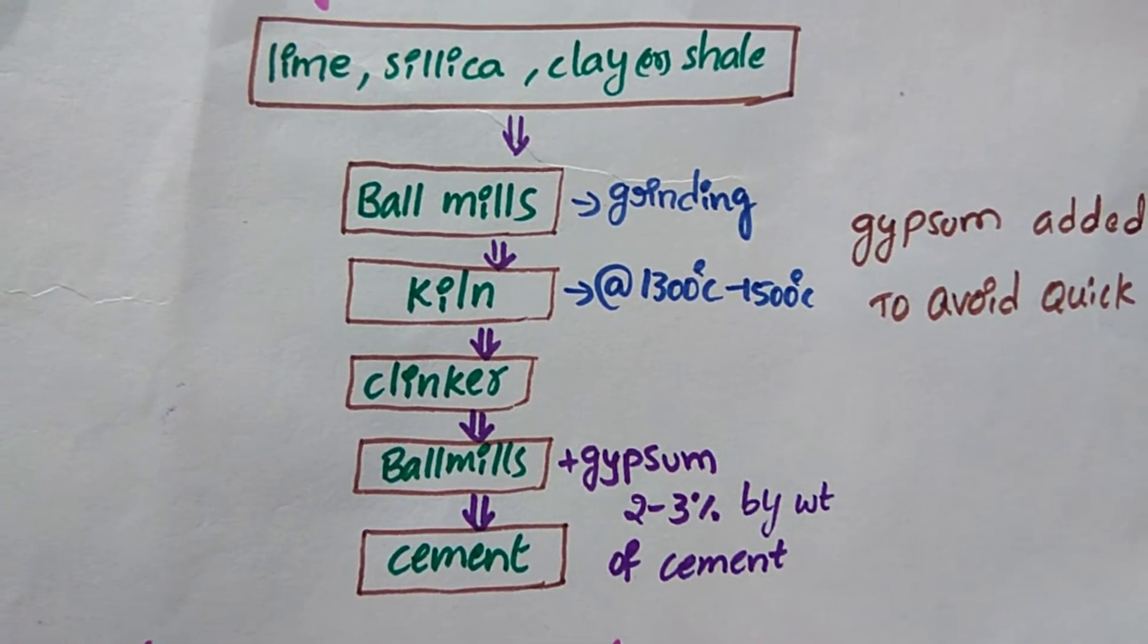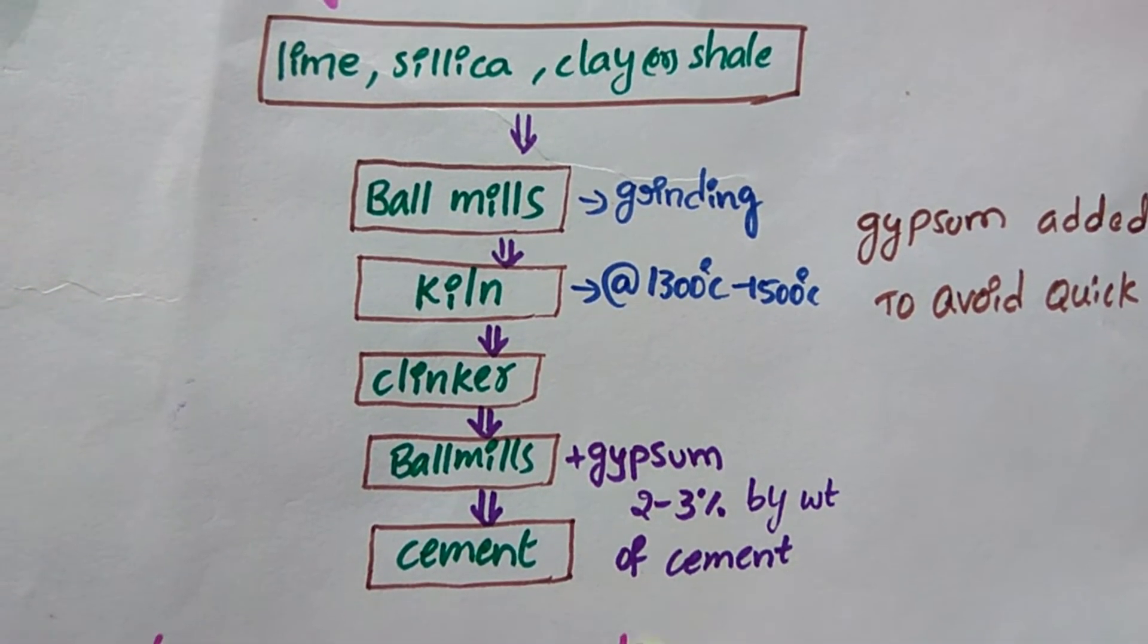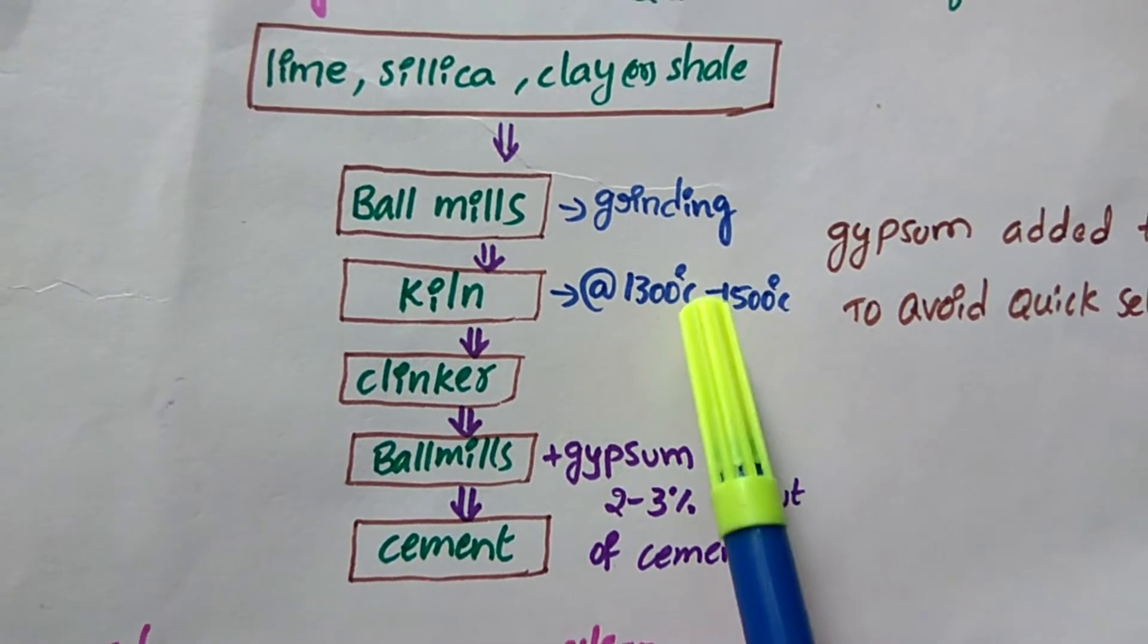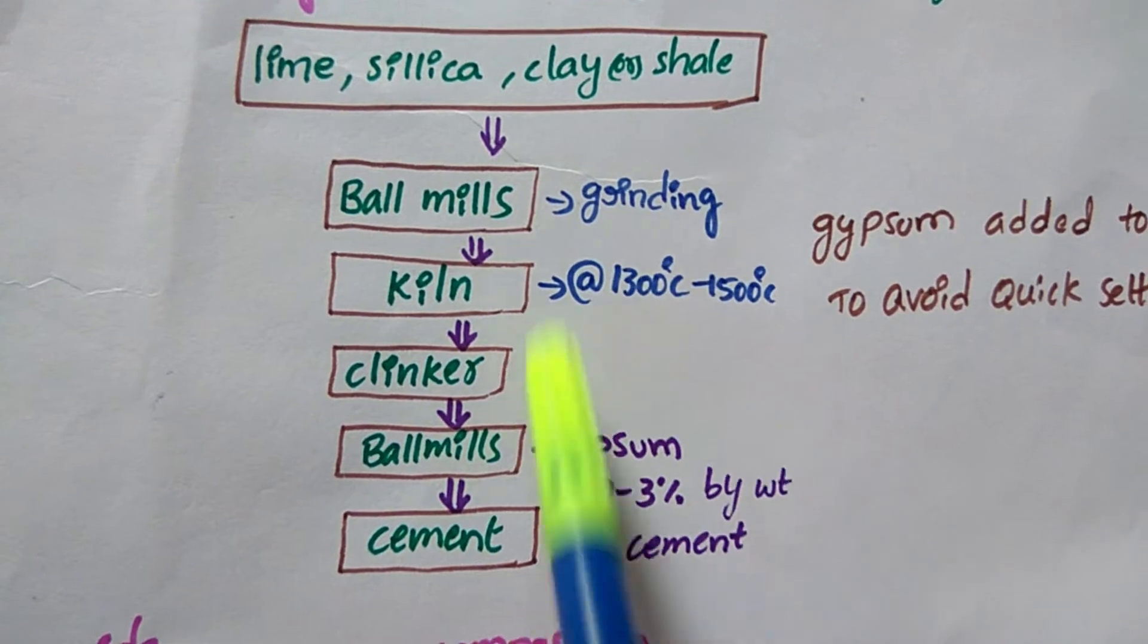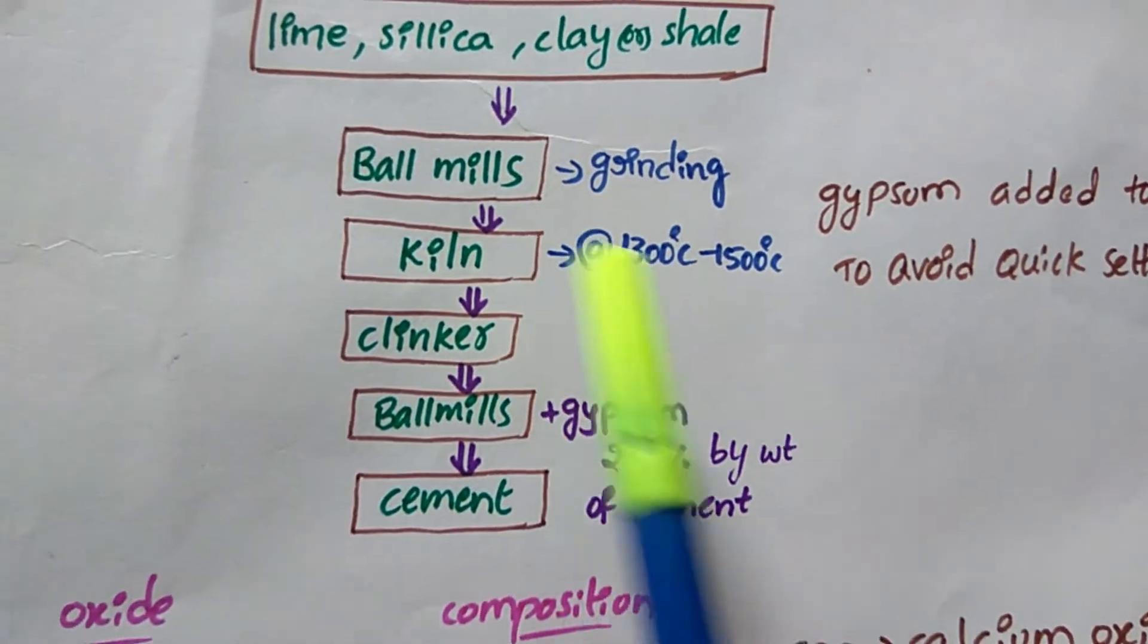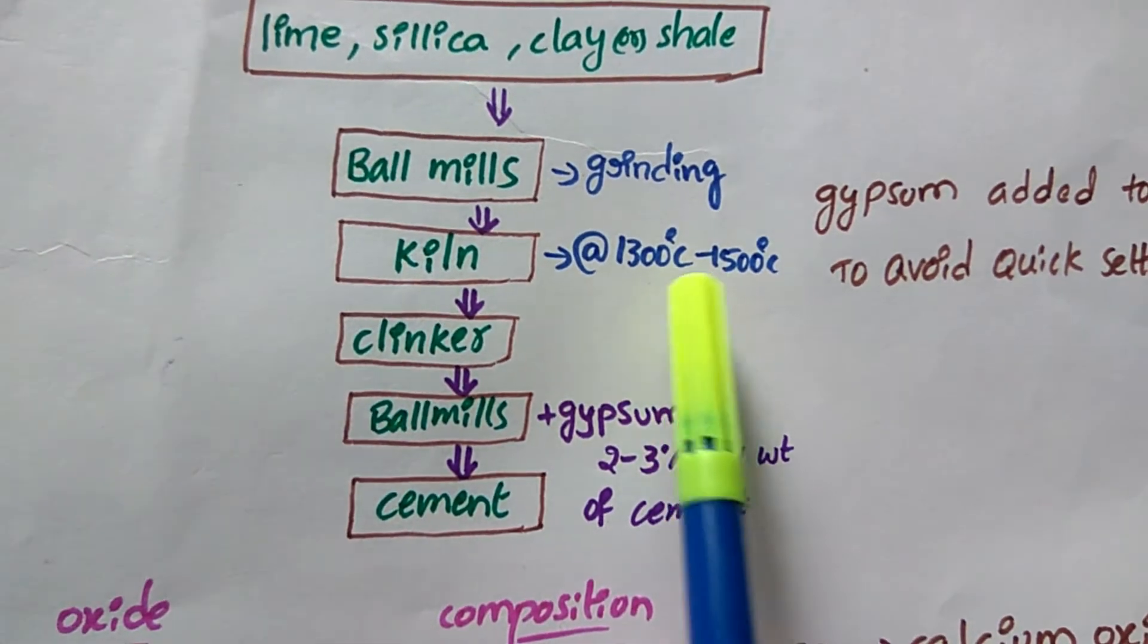MgO—are poured into the ball mills as per percentages. These materials are ground. Next process is kiln at the rate of 1300 degrees Centigrade to